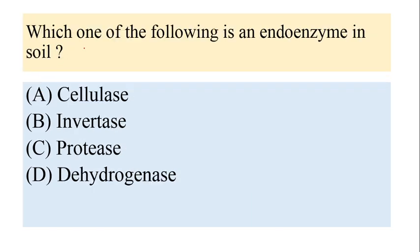Which one of the following is an endoenzyme in the soil? There are two types of enzymes: endoenzymes and exoenzymes. Endoenzymes are those that the cell produces and they remain inside the cell. Exoenzymes are produced by the cell but are found outside the cell. The answer here is dehydrogenase — dehydrogenase is the endoenzyme present inside the soil.